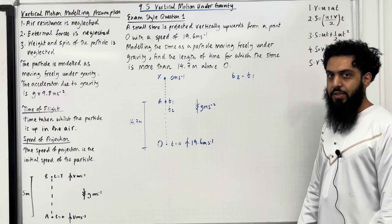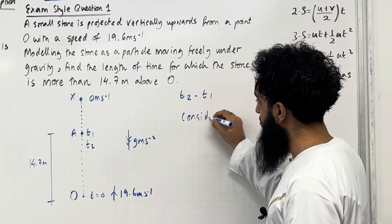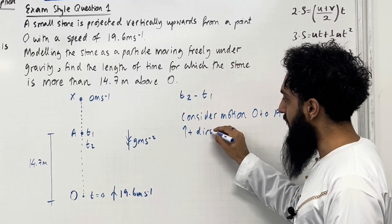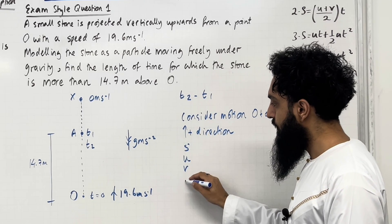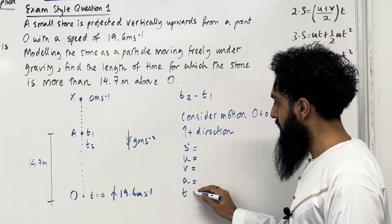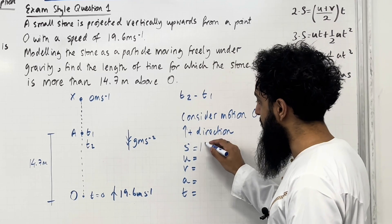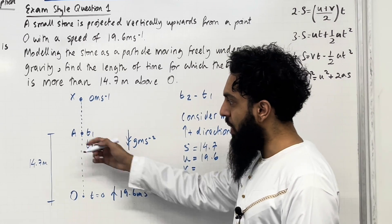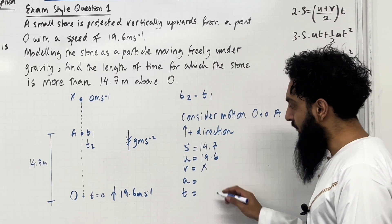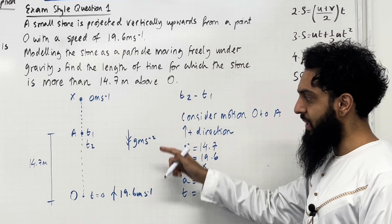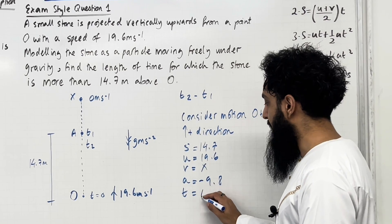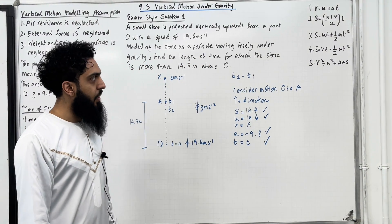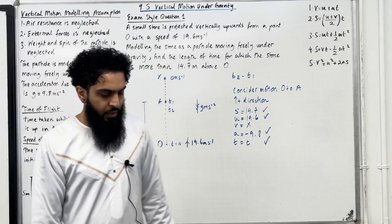Let's work out t1 and t2. Consider motion O to A, taking upwards to be the positive direction — write down SUVAT. From O to A: S = 14.7 metres, U = 19.6, V is unknown, acceleration = −9.8 (since we're taking up to be positive and g acts downwards), and t we keep as t. The quantities we're interested in are S, U, A, and t, so the correct SUVAT formula is number 3: s = ut + ½at².